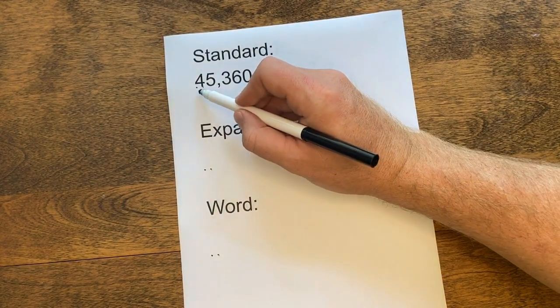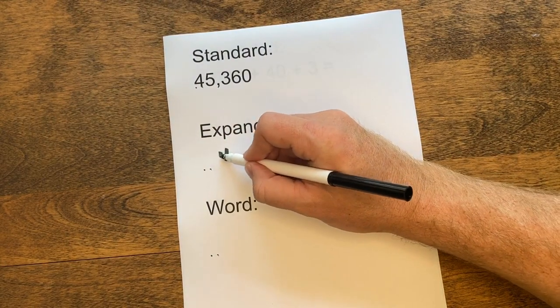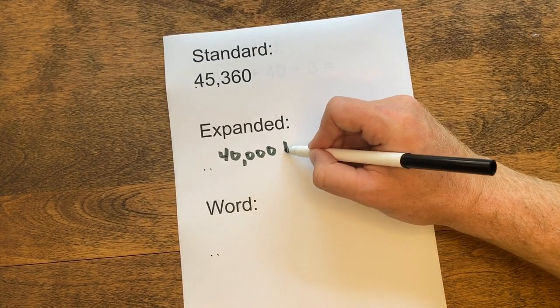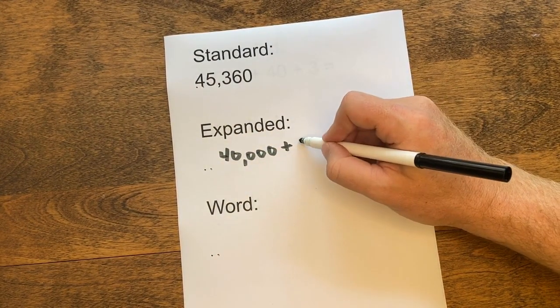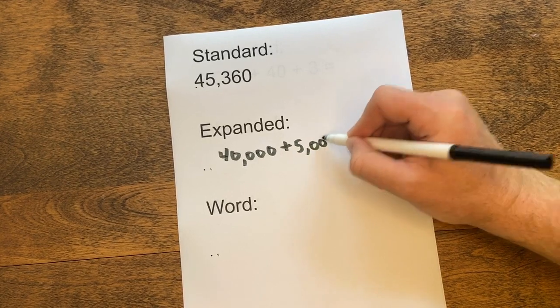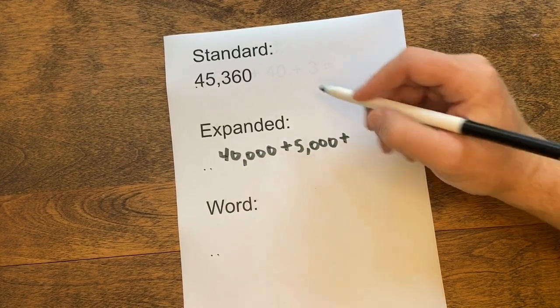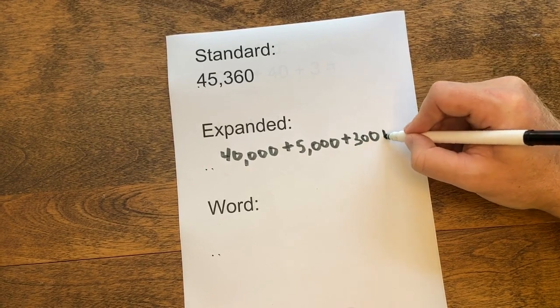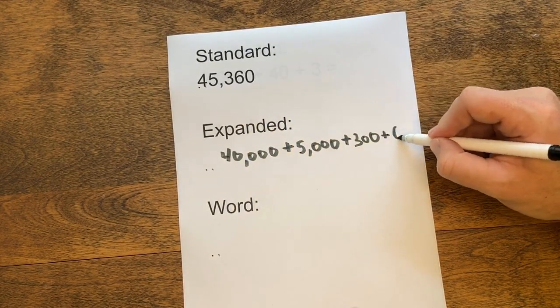In expanded form, we pull apart that standard number. So we have 40,000, 4 is in the 10,000 spot, plus 5,000, plus 300, so we're writing it as an addition sentence, plus 60.